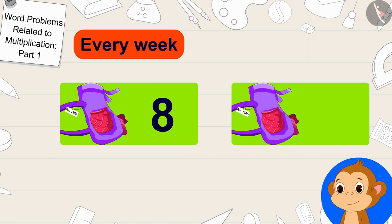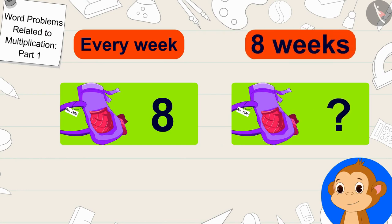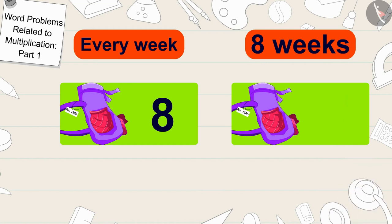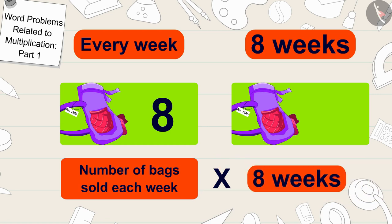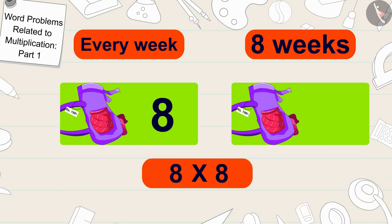First we will find out how many bags Babban will sell in eight weeks. What do we need to do to find this? Exactly, the number of bags sold each week has to be multiplied by the total number of weeks. Eight times eight equals 64.